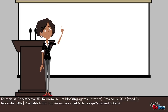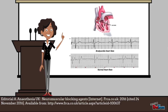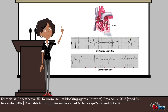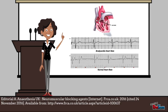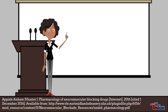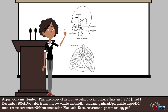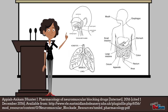Another known side effect of succinylcholine is bradycardia. This occurs due to stimulation of the muscarinic receptors at the sinoatrial node and is therefore an off-target side effect. Bradycardia is more common in children or may be present in adults after a repeat dose.